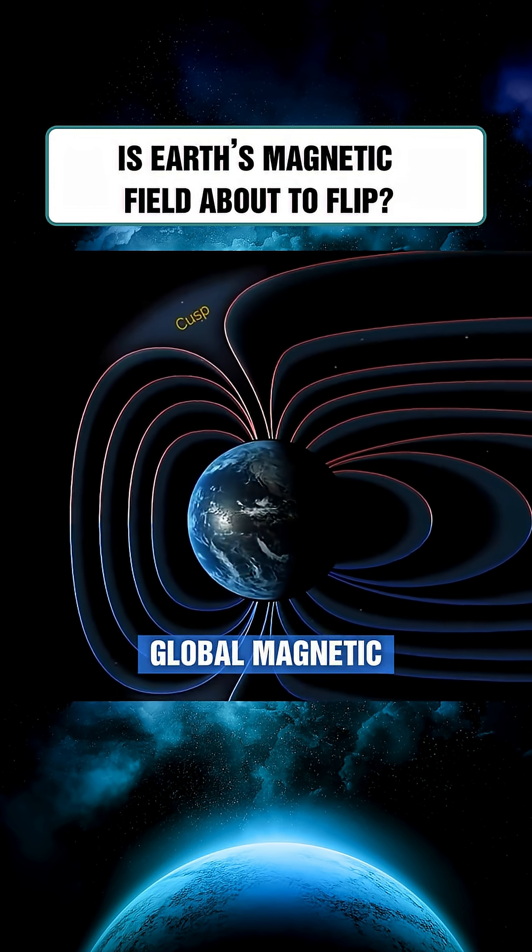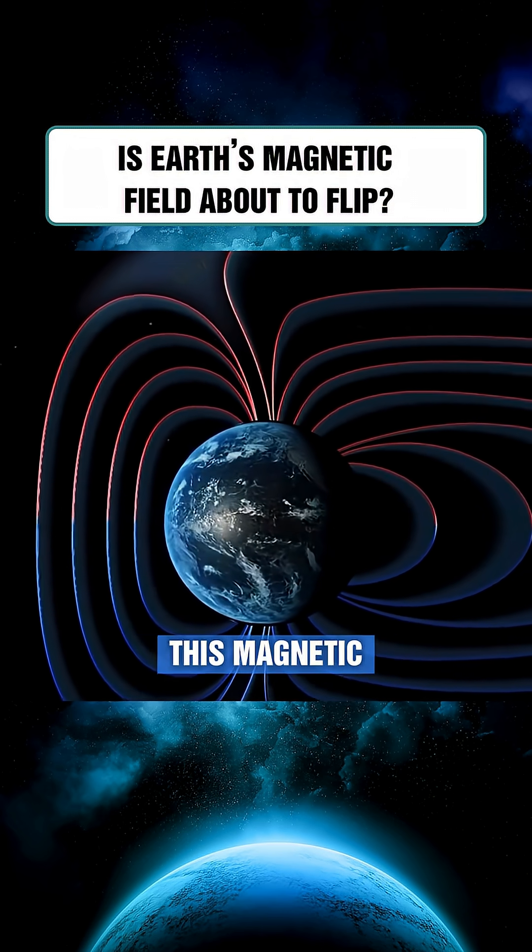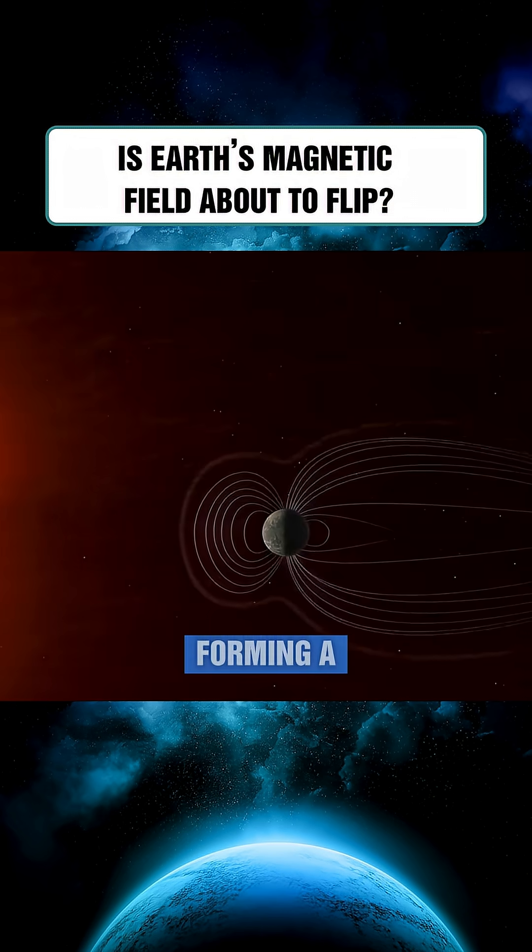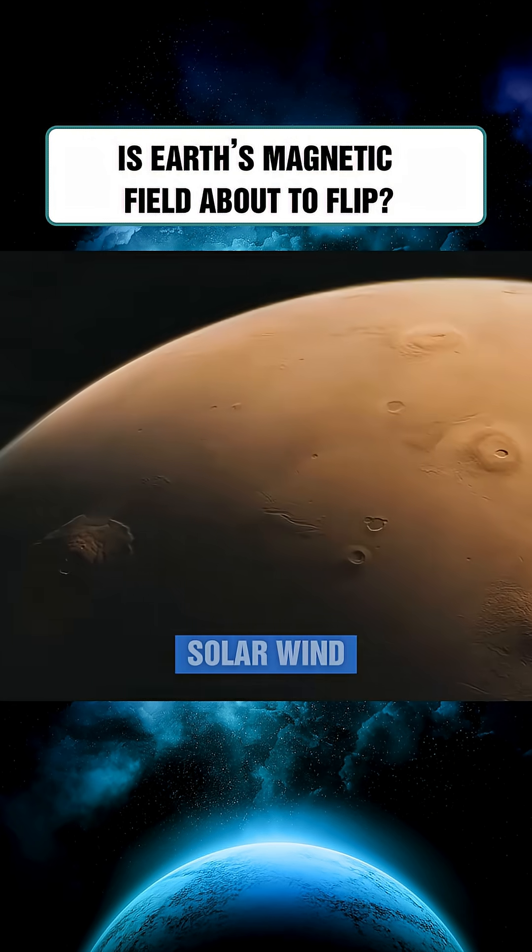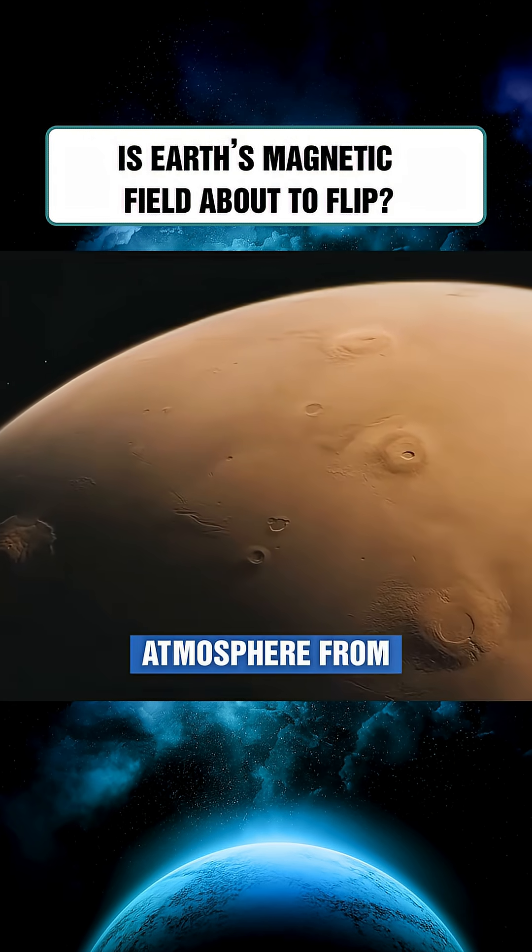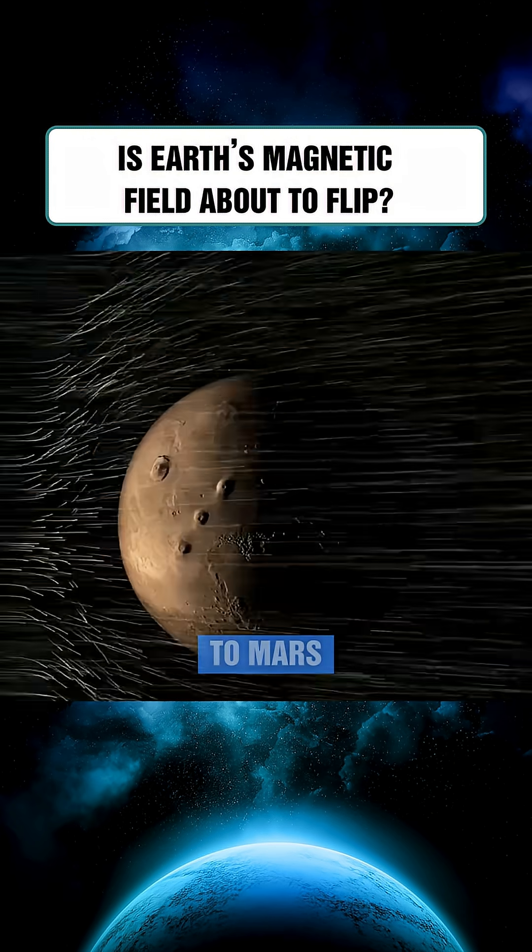This magnetic shield stretches into space, forming a vast magnetosphere that directly faces the solar wind, protecting our atmosphere from being stripped away, as happened to Mars long ago.